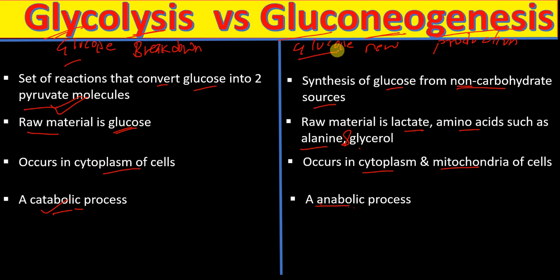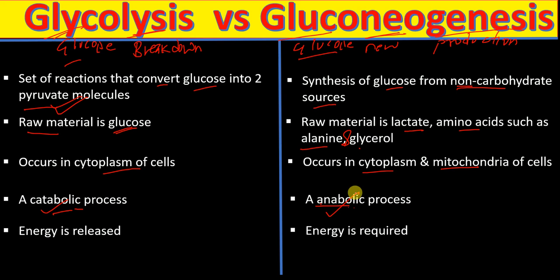The final difference is that in glycolysis, energy is released, because it is a catabolic process. Whereas in gluconeogenesis, energy is required, because it is an anabolic synthesis process.